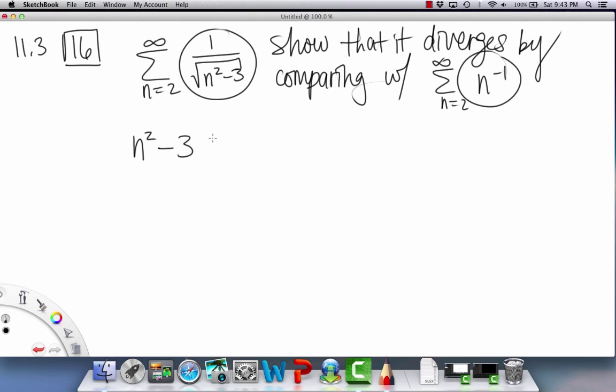I think you'll pretty much all agree that this is always less than or equal to n squared, right? Because we have the same thing here, and then a minus 3 on the left side, so that makes it less than this one.